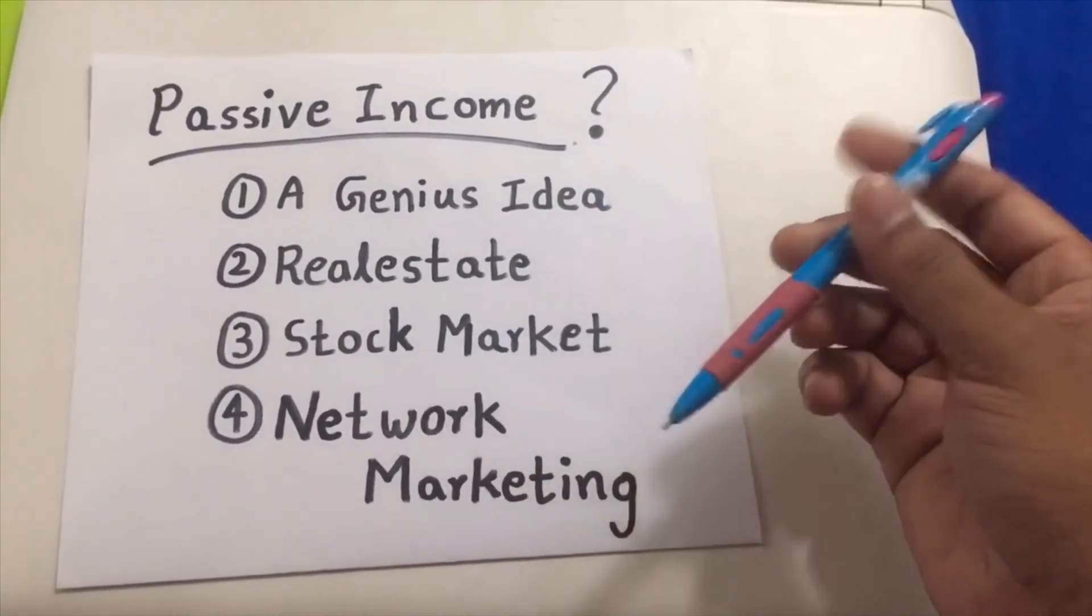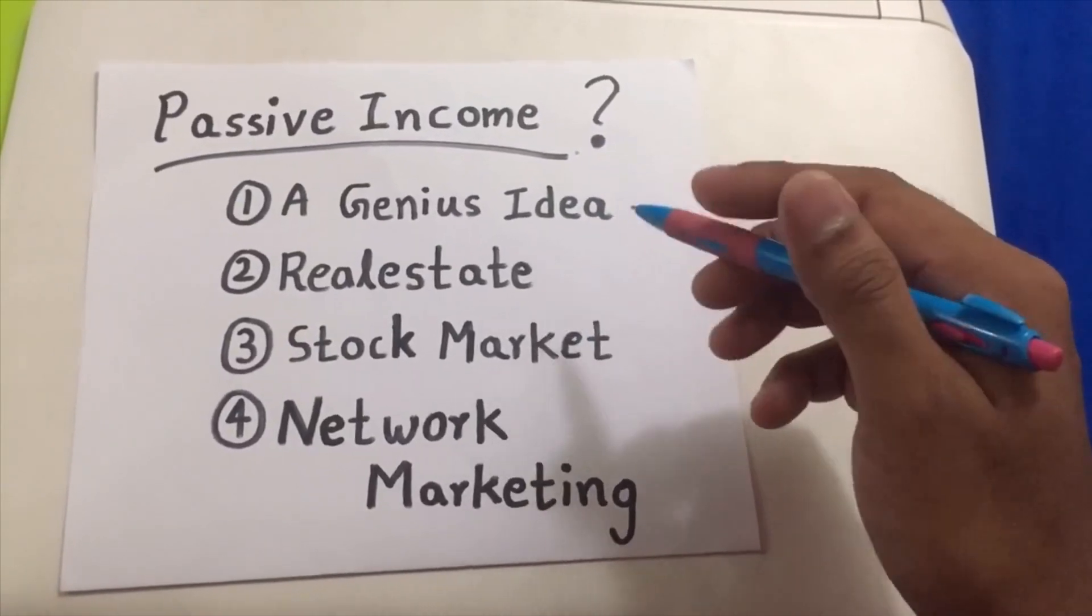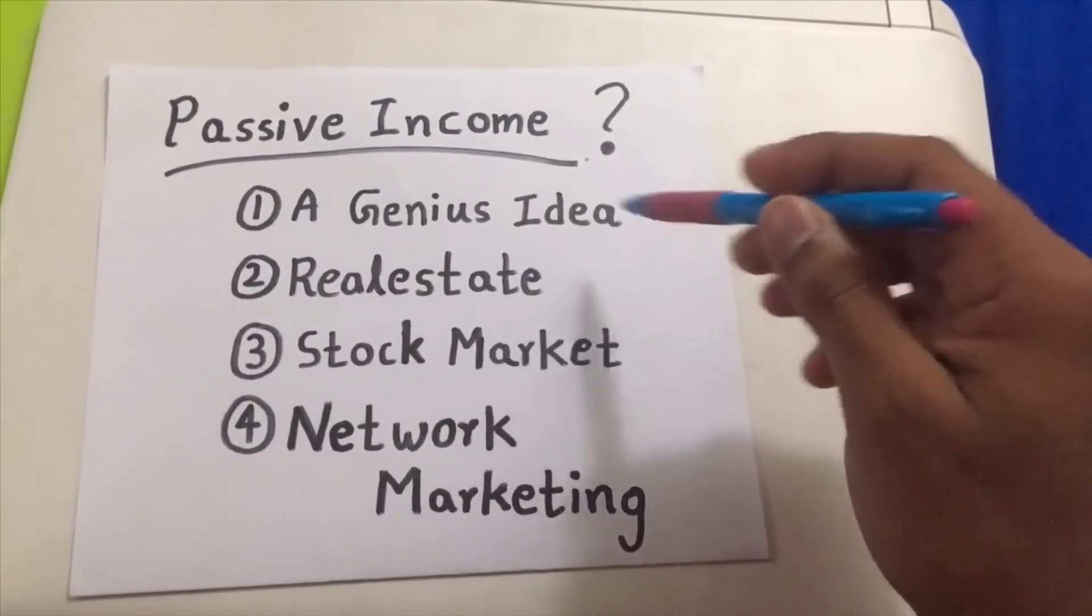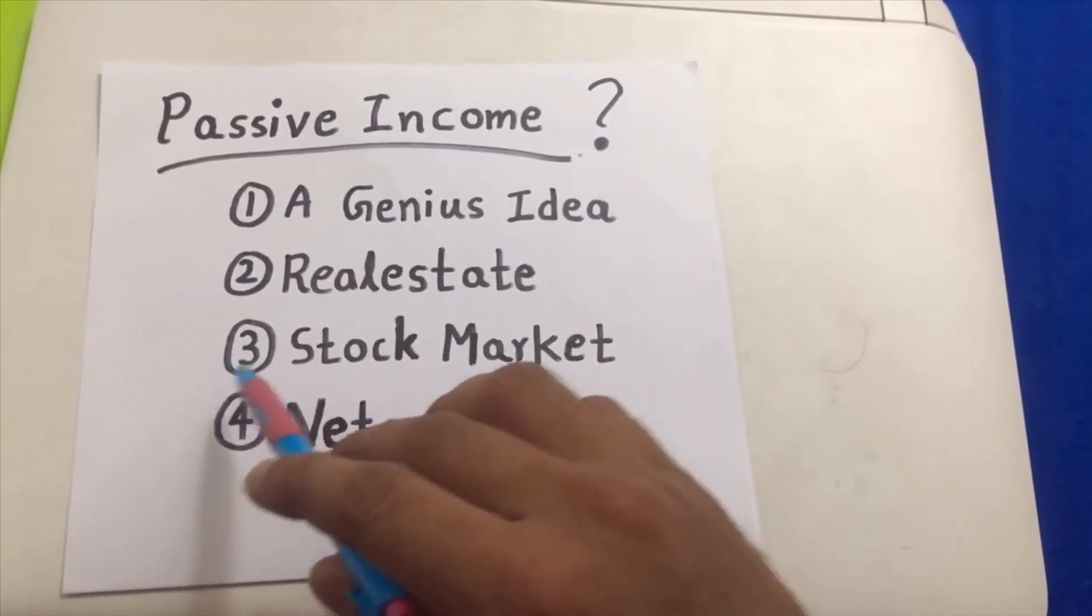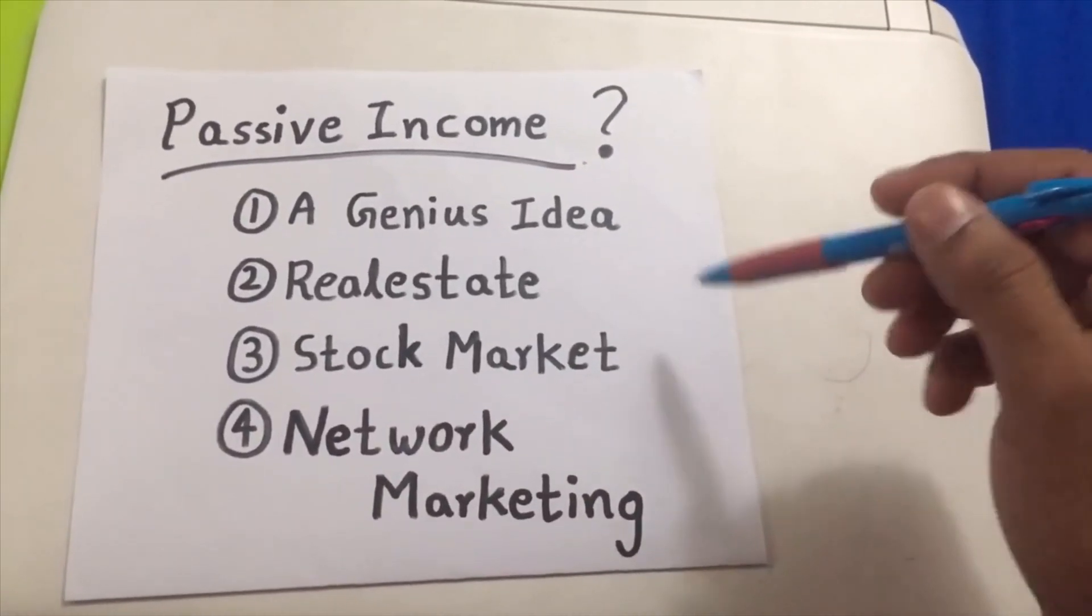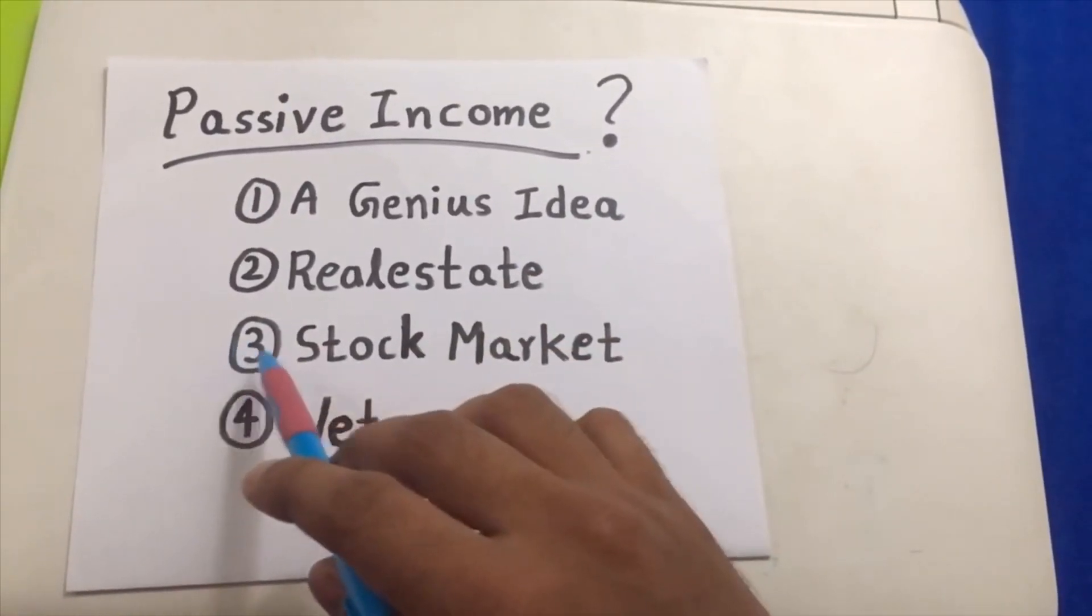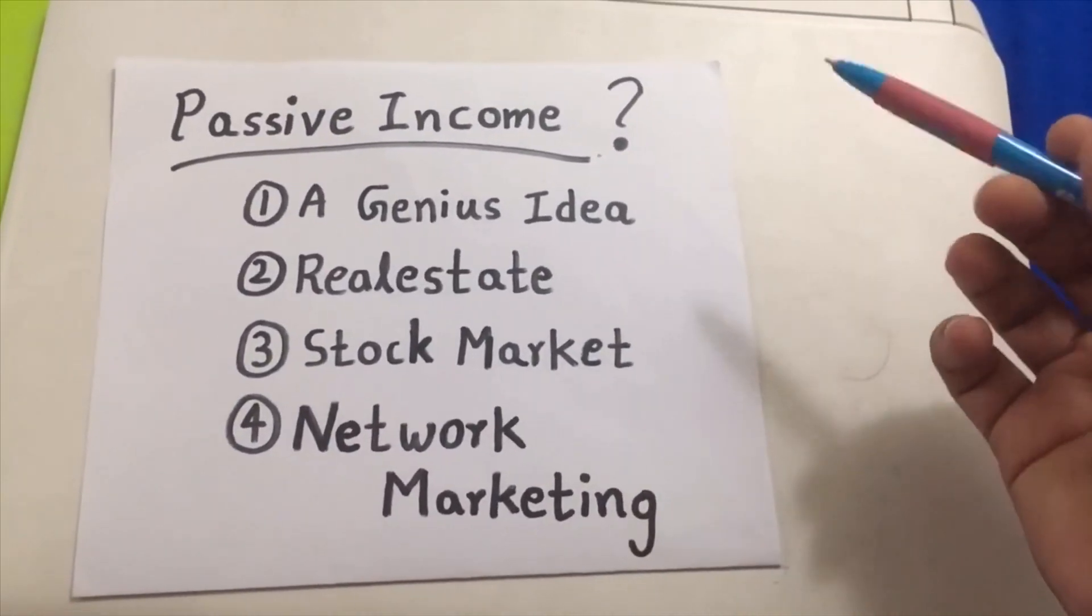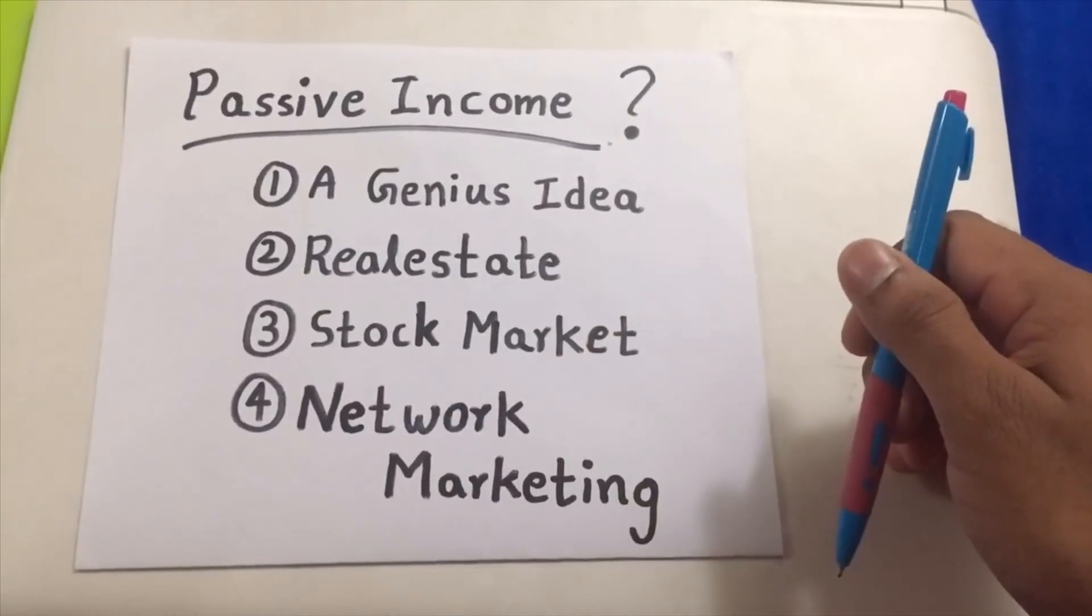Second is real estate. You and me can do this, but to start real estate you should have a lot of money. As an ordinary person, it is very hard to start real estate because you need a huge capital. Number three is stock market. There's a huge risk in the stock market. You don't know when the stock prices are going up and down. Because there's a huge risk here, it is not a wise idea to invest in stock market.